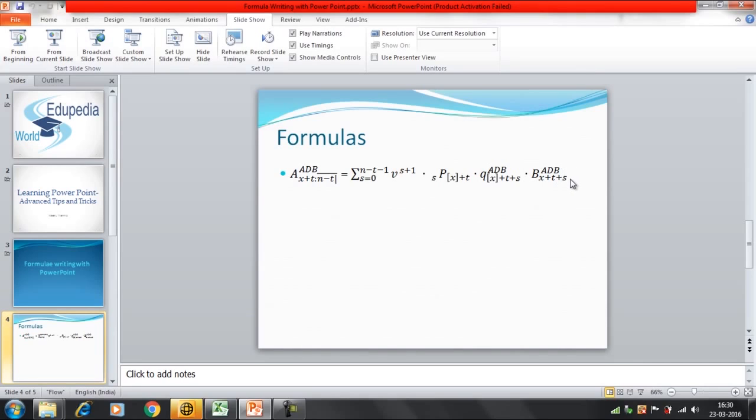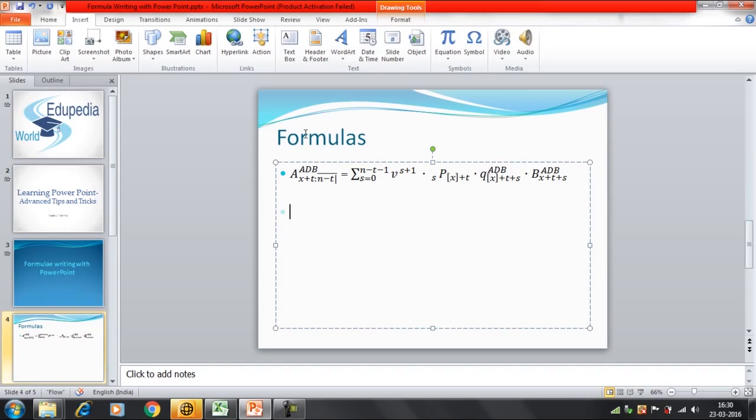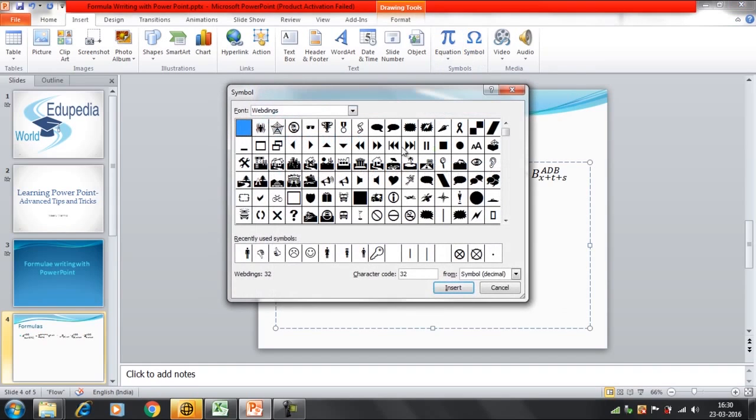Suppose I want to write a formula here. What I will do is I will click on Insert. And after that, I will be having two options here: equation and symbols. If you want to insert a particular symbol, then you can click here and you can search for the symbol and click on insert.